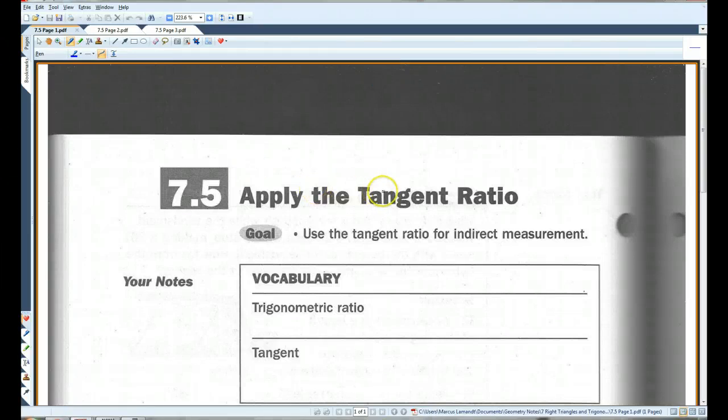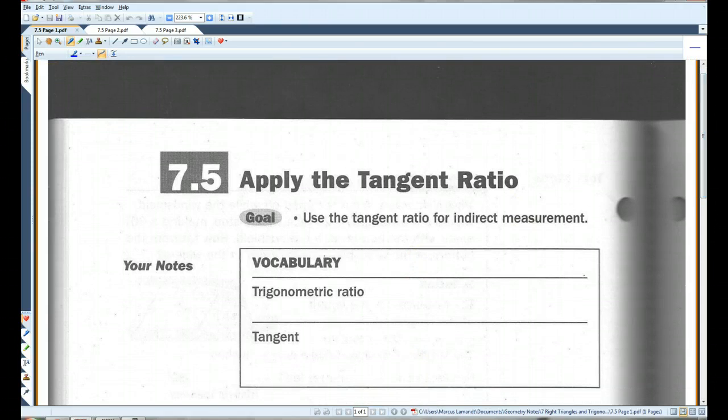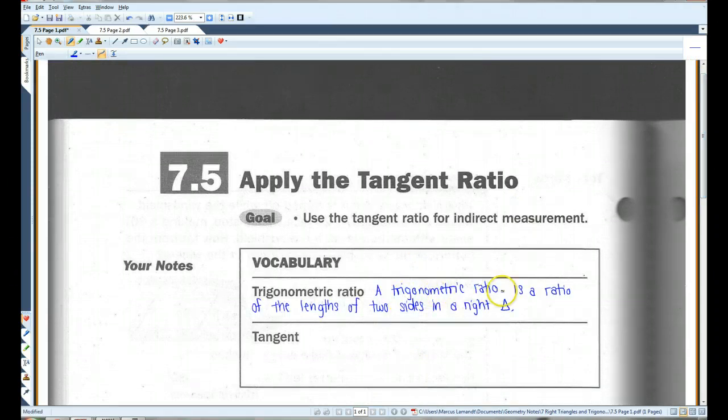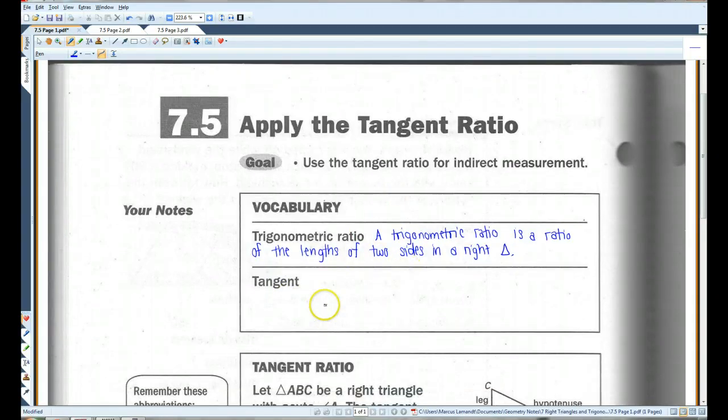Alright, 7.5, apply the tangent ratio. A couple vocab terms to start. A trigonometric ratio is a ratio of the lengths of two sides in a right triangle. There are actually three trig ratios I'm going to have you learn in this unit. The first one is called tangent.